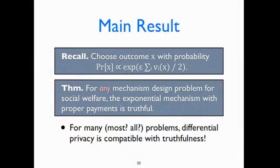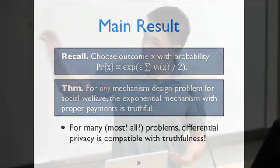Depending on how much you believe in the conjecture that the exponential mechanism is the right answer for differential privacy, we can say that for many problems, differential privacy is compatible with truthfulness, at least for this mechanism design with payments setting.